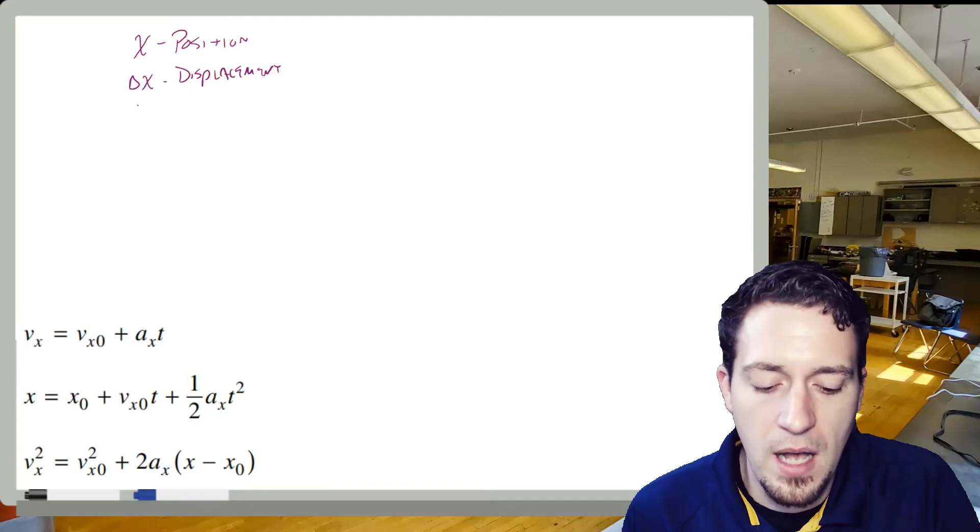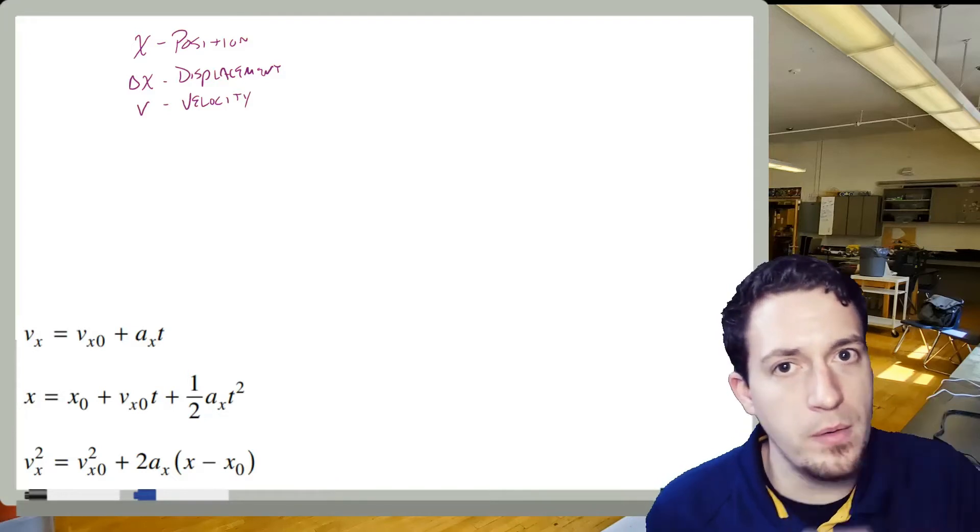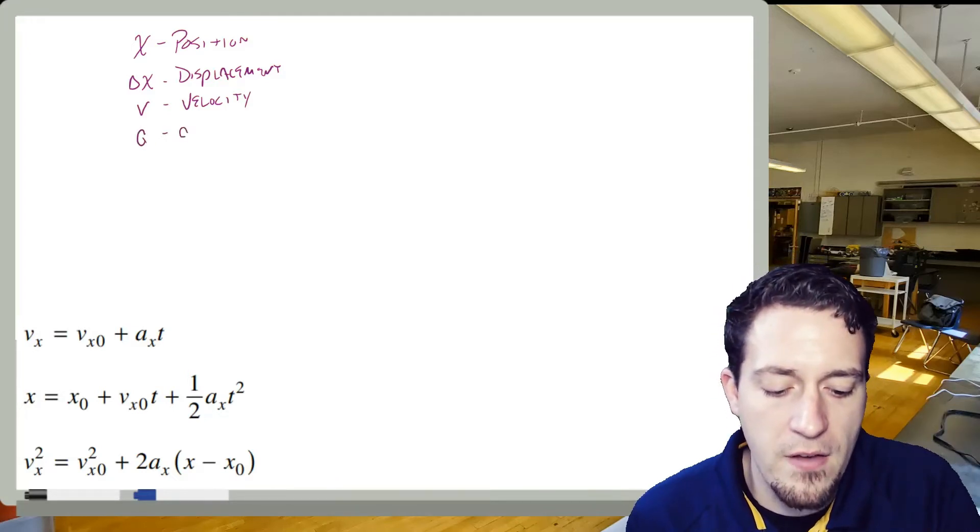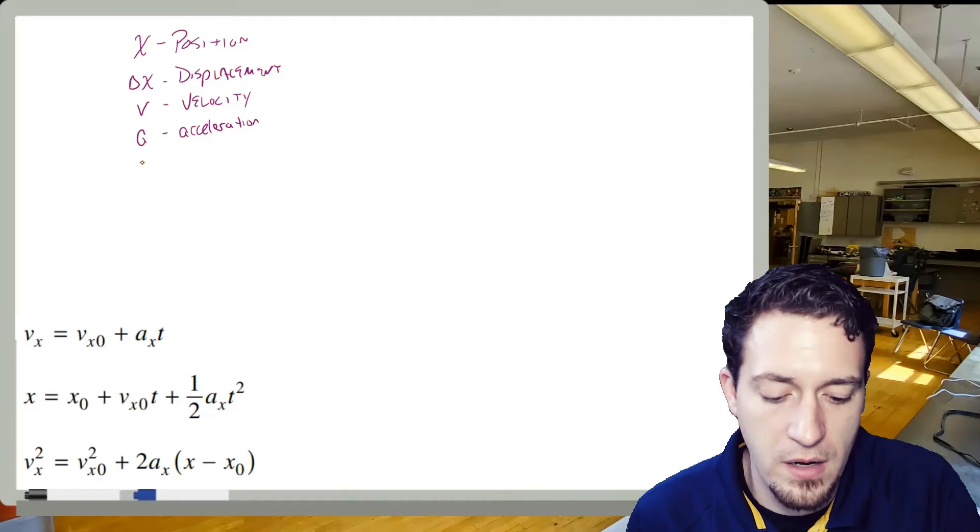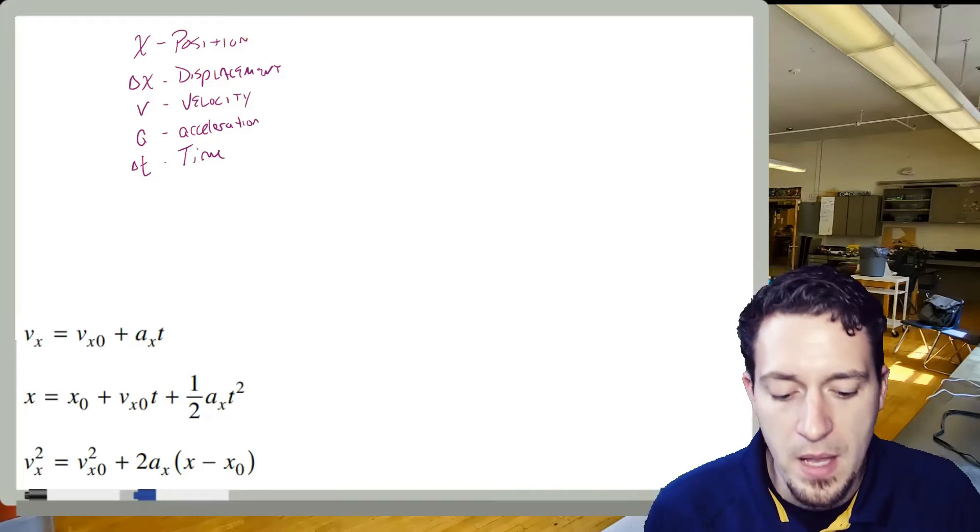And then we have something like v, which this was velocity. Sometimes also referred to as speed. Remember, there is a difference between them. And then a we have as acceleration. And then finally, the thing that is there is t. And if you remember from class, I am partial to delta t. And this is our time.